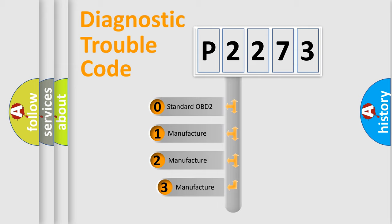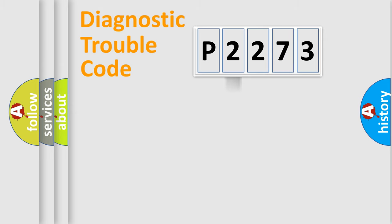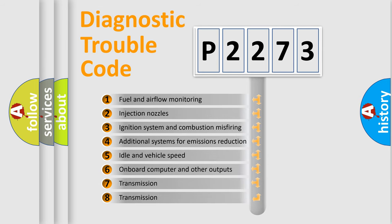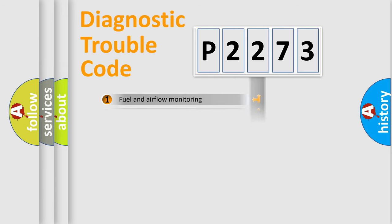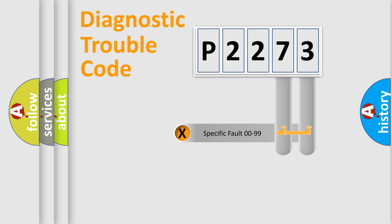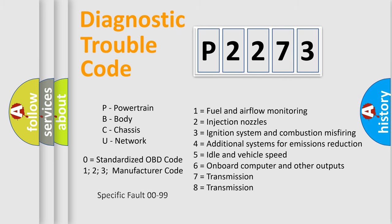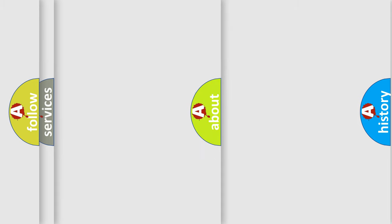If the second character is expressed as zero, it is a standardized error. In the case of numbers 1, 2, or 3, it is a more specific expression of a car-specific error. The third character specifies a subset of errors. Only the last two characters define the specific fault of the group. This division is valid only when the second character code is expressed by the number zero.